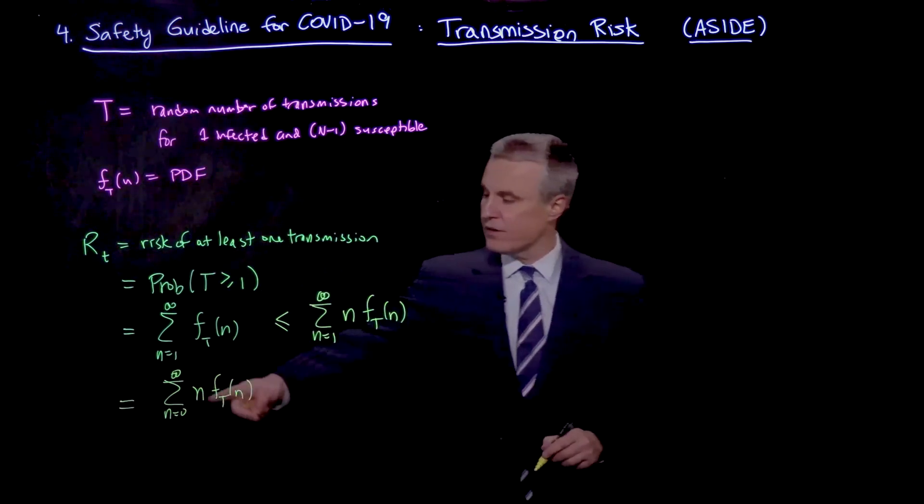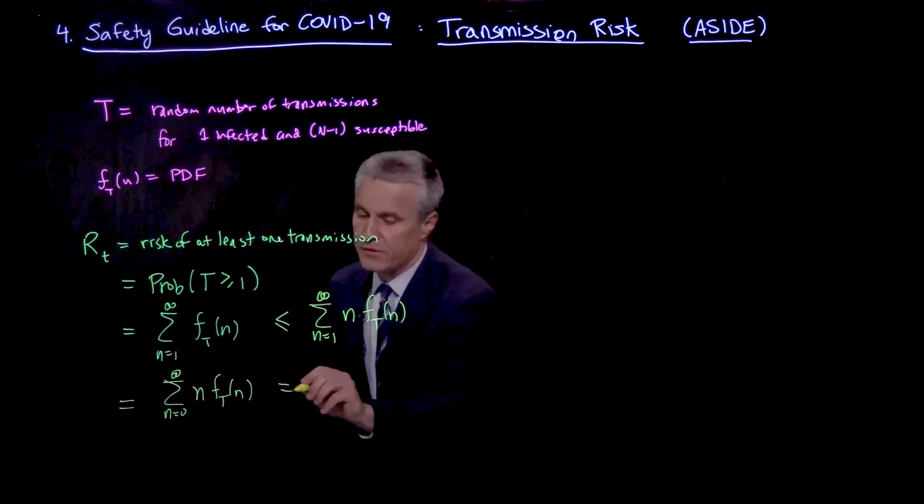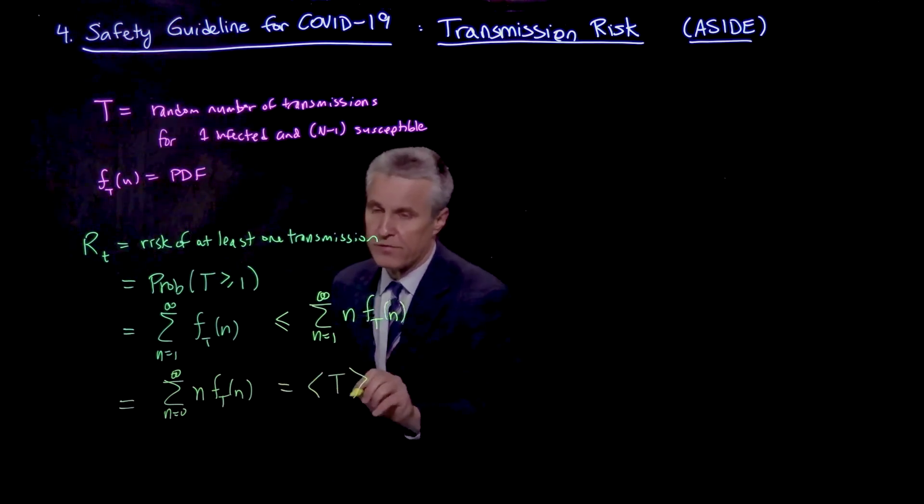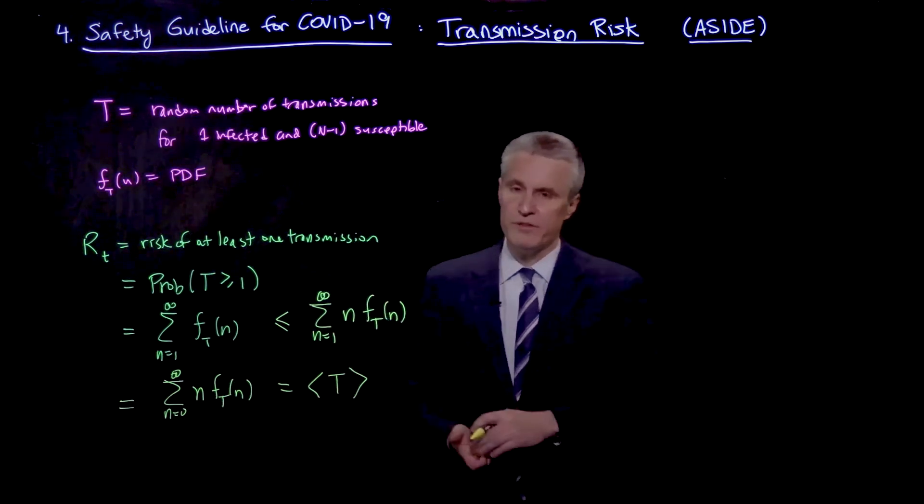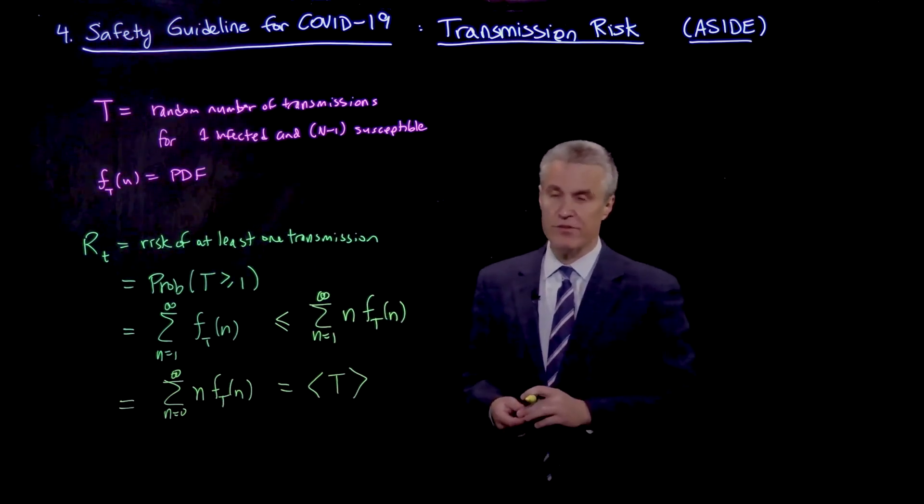And then by definition here, this thing is the expected value of the number of transmissions. Because I'm summing the number of transmissions, little n, times the probability of that event occurring. So that is the definition of the average.